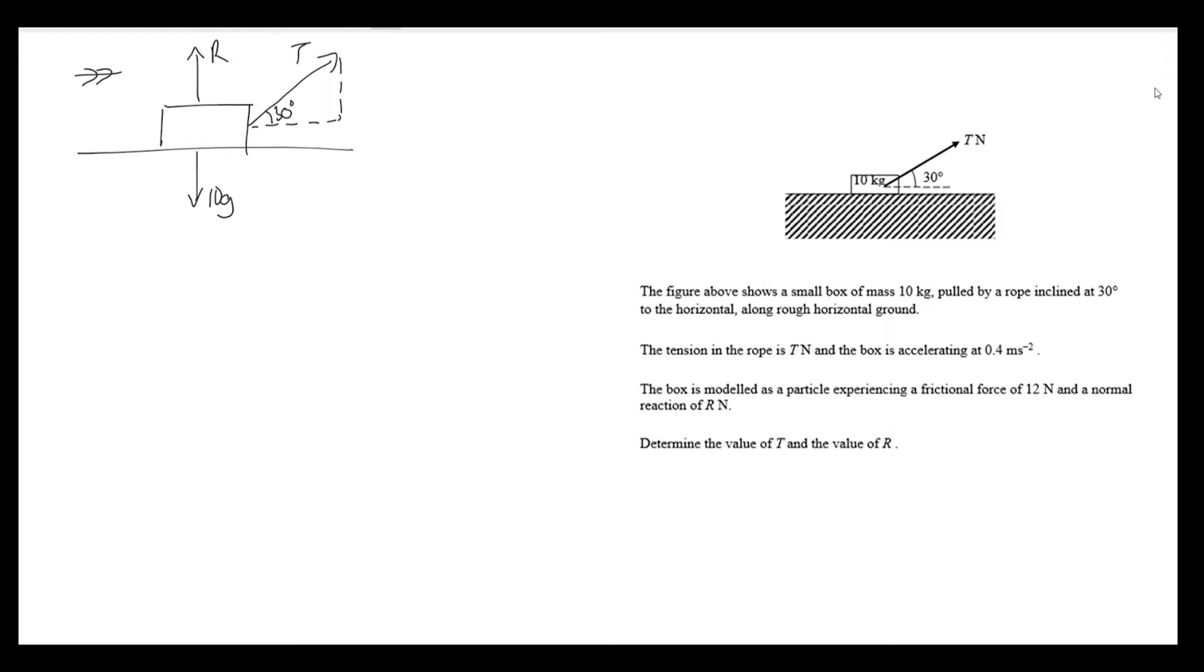We're told that the tension in this rope is making the box accelerate at 0.4 meters per second squared, so we know the direction of movement is to the right. I'm going to draw that motion arrow on there and the acceleration of 0.4.